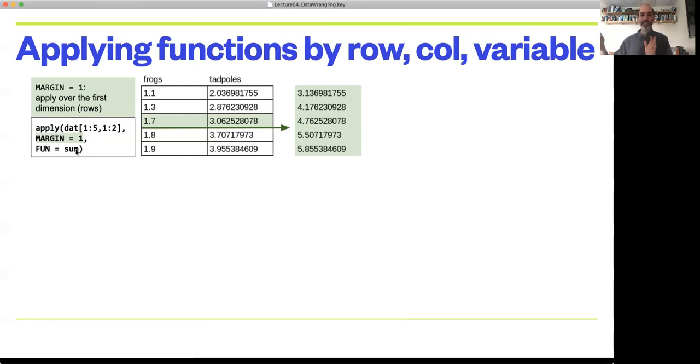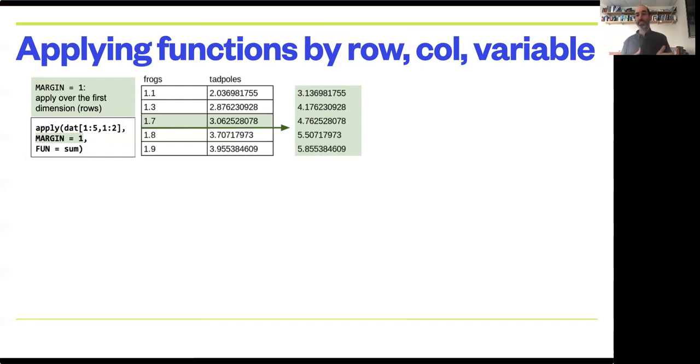And then the third argument here is the function we want to apply. So if I want to calculate the sum by row, I can put function equals sum. If I want to calculate the mean by row, I can put function equals mean or function equals standard deviation or any of the functions we showed on the summary statistics. But any function in R more generally,